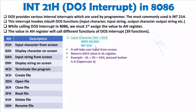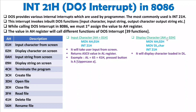For display character, load AH with 02h. Write: MOV AH, 02h. Then load the character you want to display into the DL register: MOV DL, character — this character can be A, B, C, or any symbol. Once you execute INT 21h, a pop-up display will appear showing the character stored in DL. So the steps are: load AH with 02h, load the character into DL, then execute INT 21h.